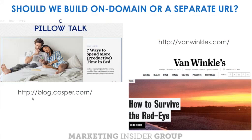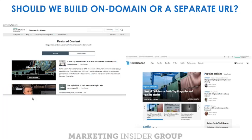Another question we often hear: should we build on our company URL or on a separate domain? We're starting to see companies that begin on-domain with a branded or lightly branded content marketing hub. Mattress company Casper is a great example with their blog called Pillow Talk. They found so much success with that — such a huge audience interested in the topics they were publishing on — that they went out and built a completely off-domain and extremely unbranded content marketing hub called VanWinkles. In the B2B technology space, Hewlett Packard Enterprise has their blog on community.hpe.com, and similarly created an off-domain, lightly branded content marketing platform called TechBeacon.